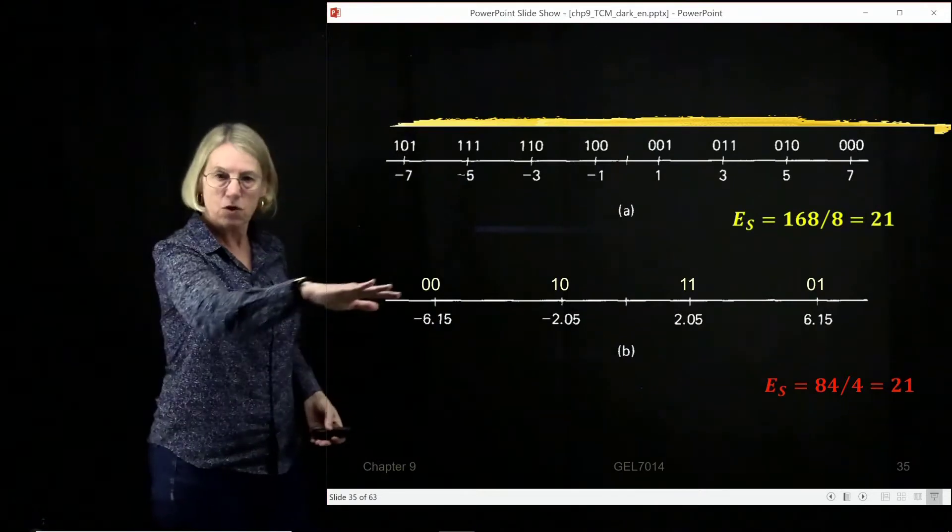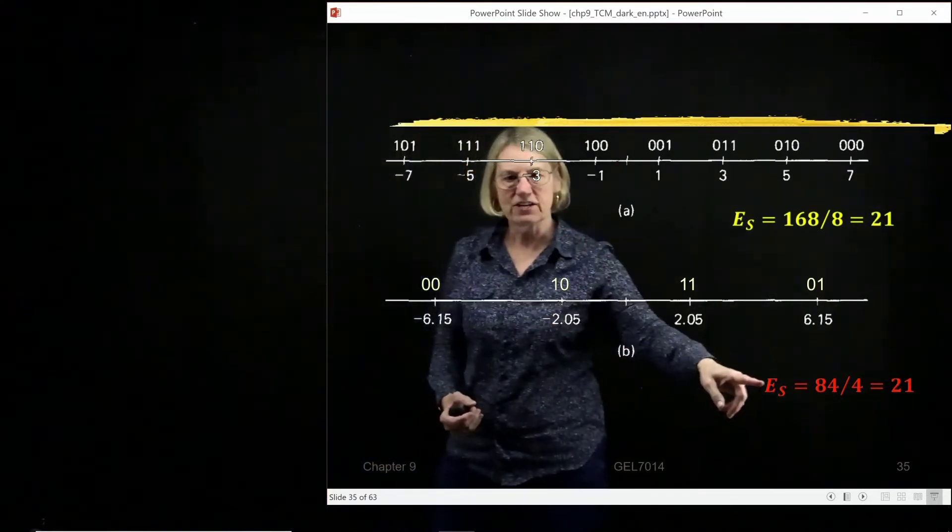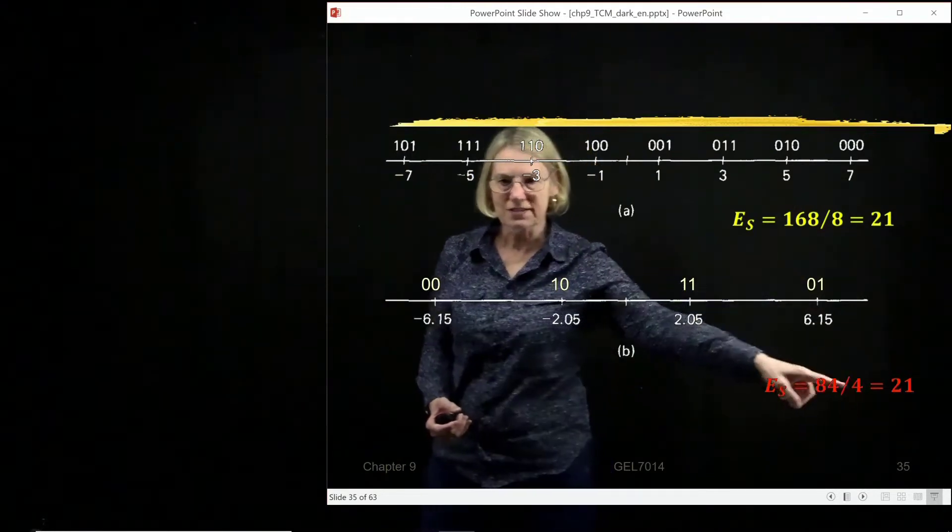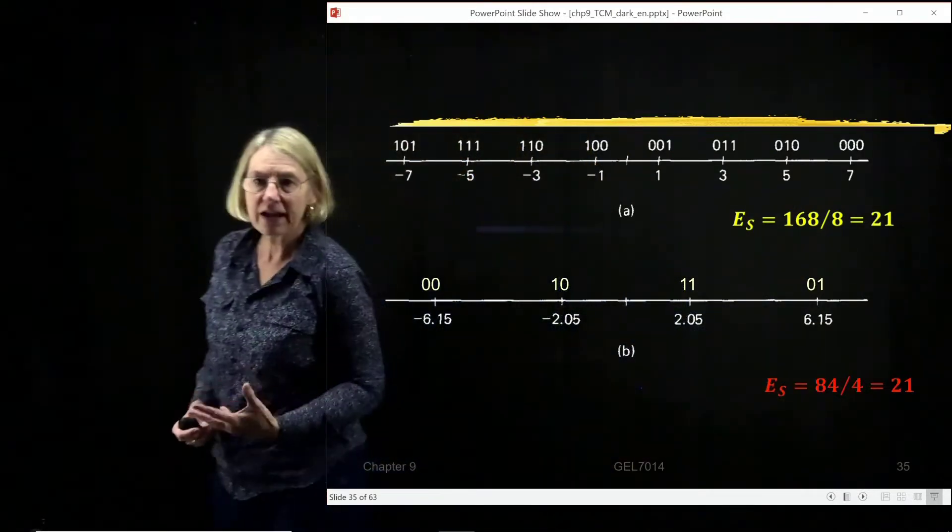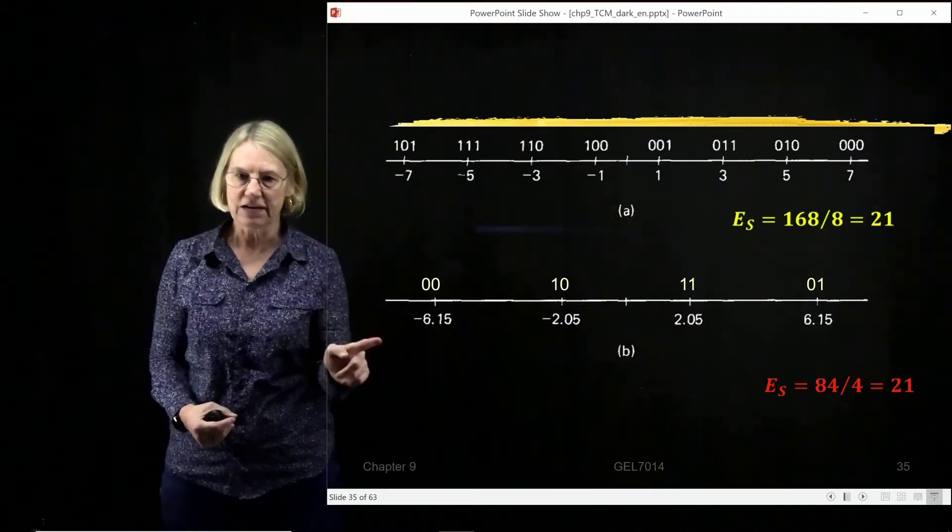And when I use these coordinates in 4 PAM, voila, I get the same average energy per symbol. So those two are the same. So when I'm comparing distances, I'm going to be comparing them between here and here.